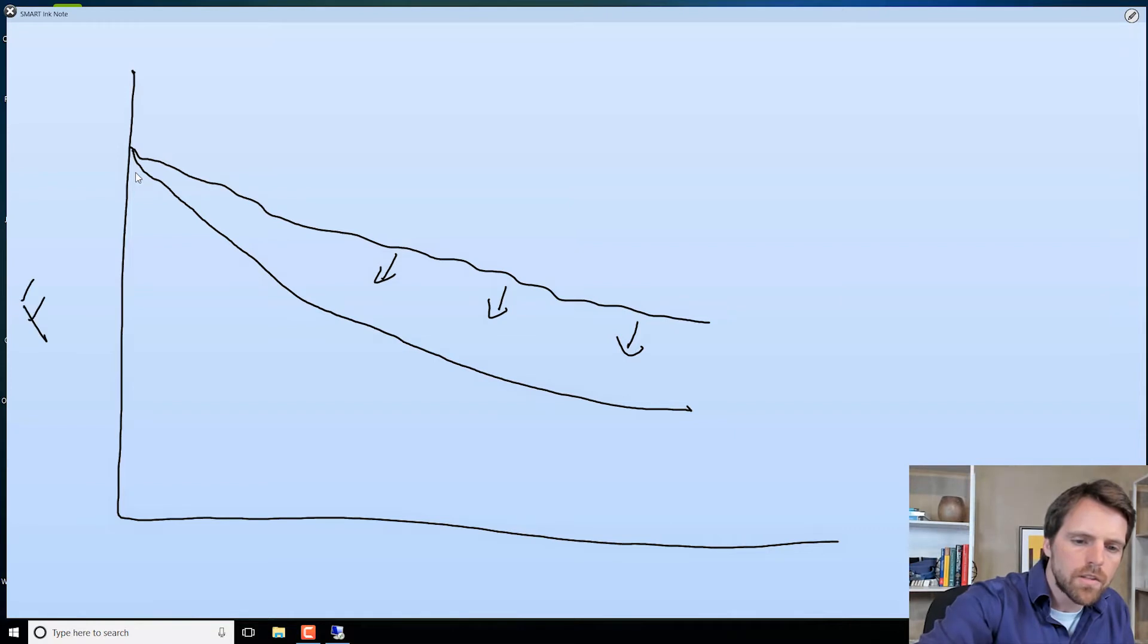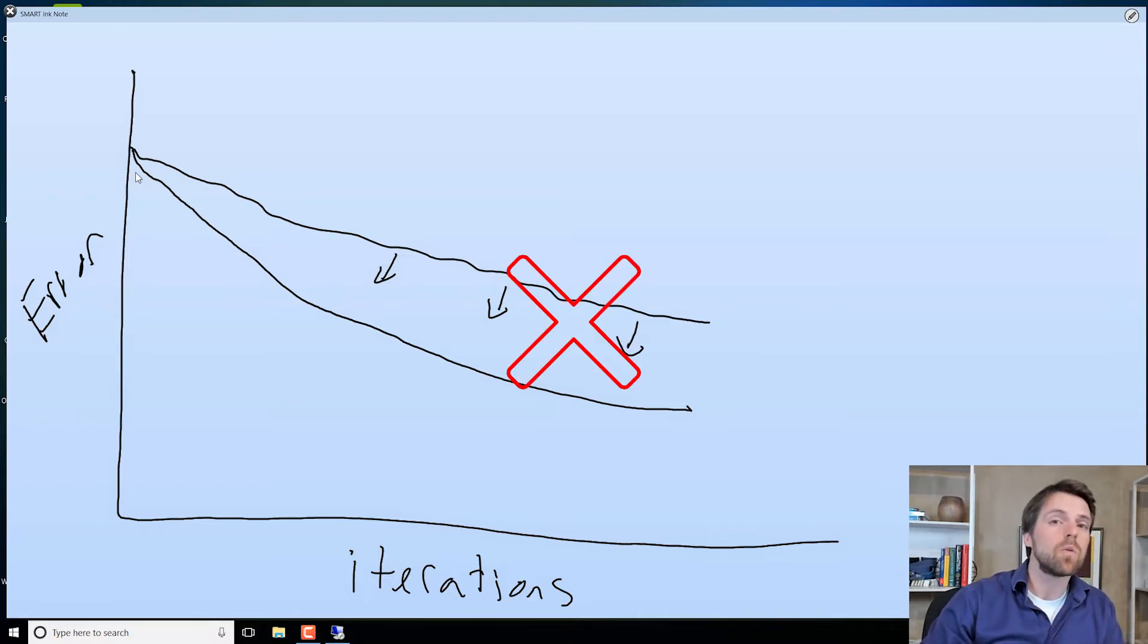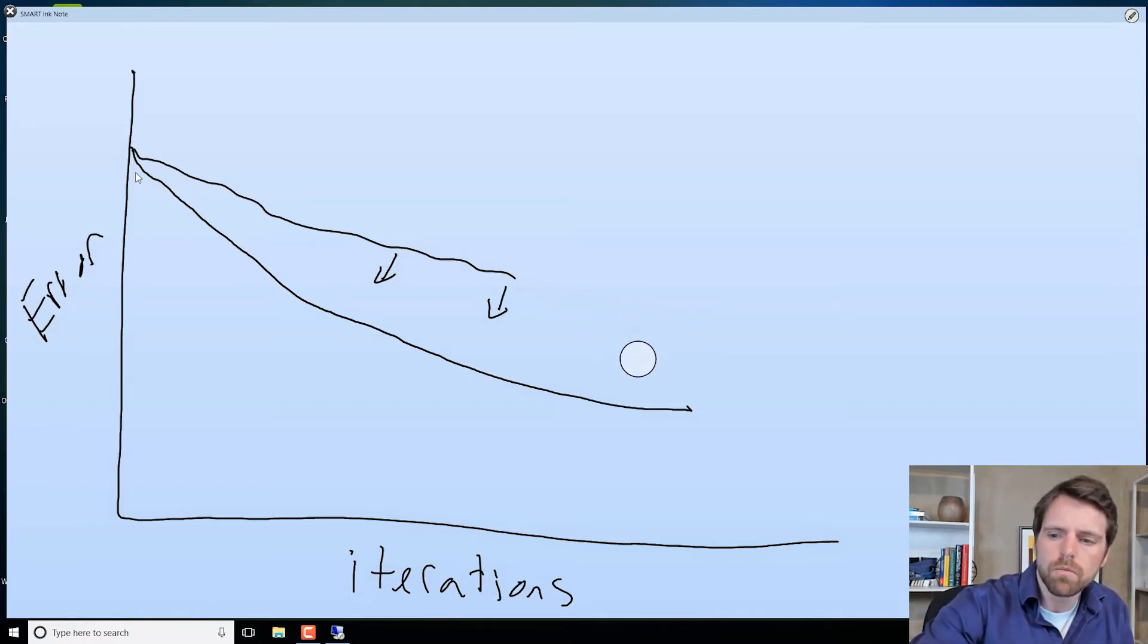So over here on the y-axis we have our error and on the x-axis we have our iterations. So as we add complexity we would like to see the training performance improve. If you add complexity and the training performance does not improve, that's probably the wrong move. Try something else. So what you're looking for is you're looking for a model structure that fits the data really well. That is, the training data really well.